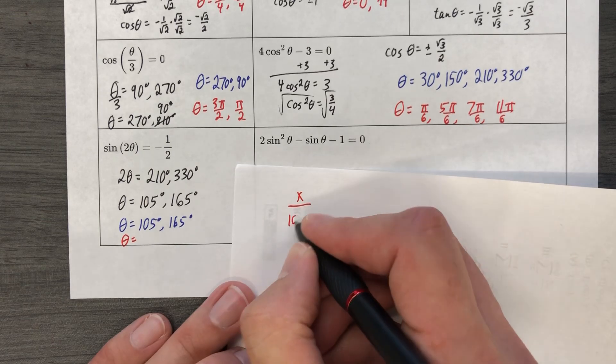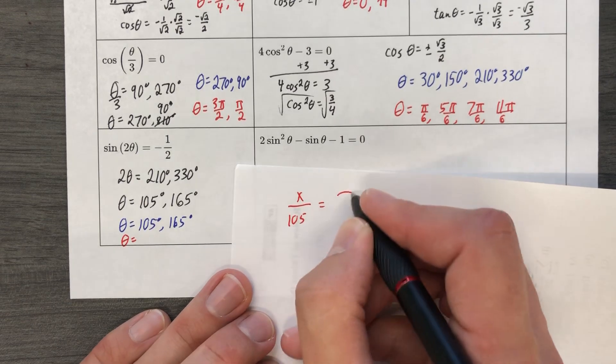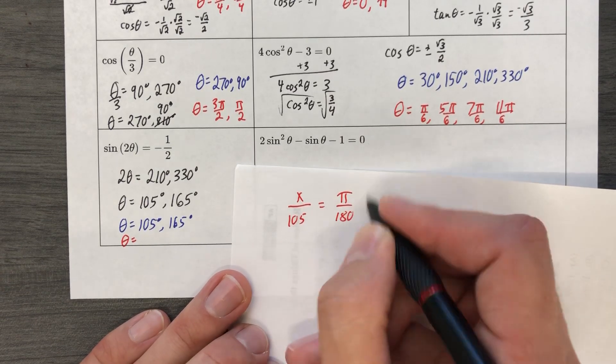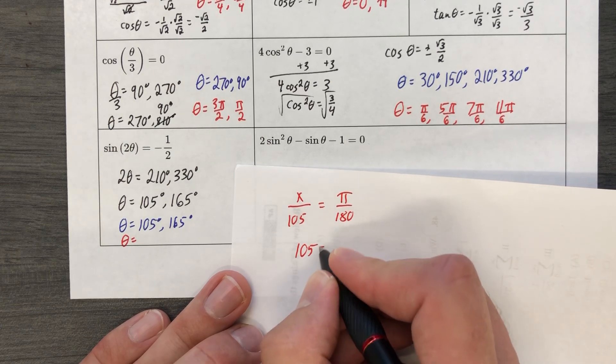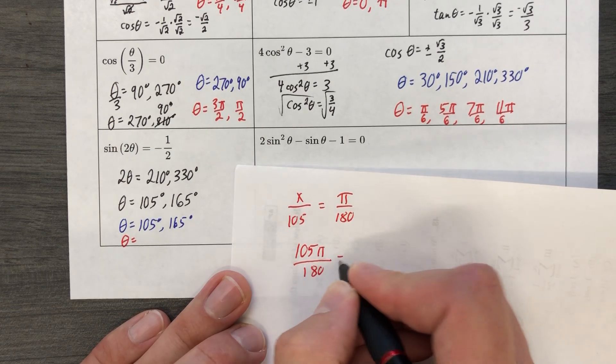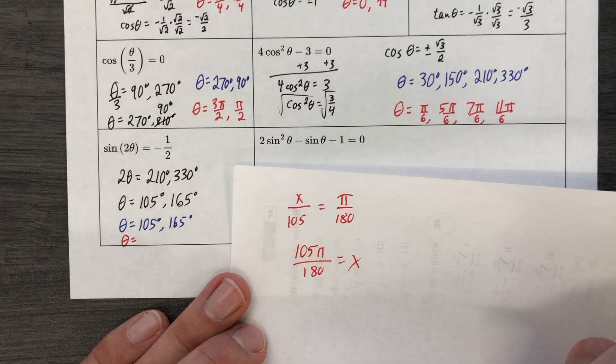Radians over degrees equals pi over 180. I'll leave the degree symbols off, but we're basically going to have 105 pi over 180 and that's going to equal x. We're simply going to just reduce that fraction.